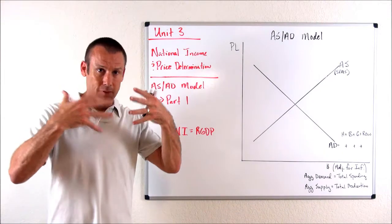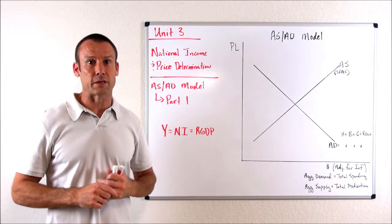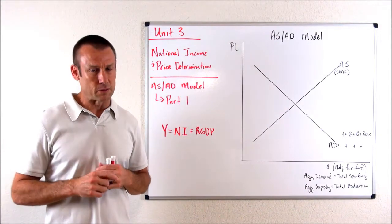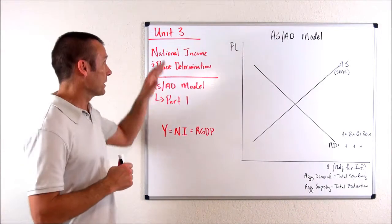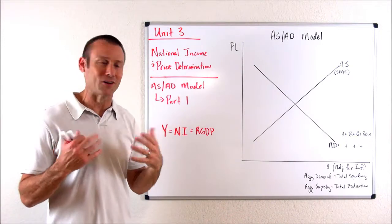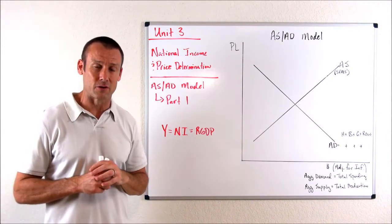Usually, the overlap is like 99%, so everything works out just fine, but I'm going to try to be even more in alignment with the AP course right now. I'm going to name unit three after what AP calls it, National Income and Price Determination.